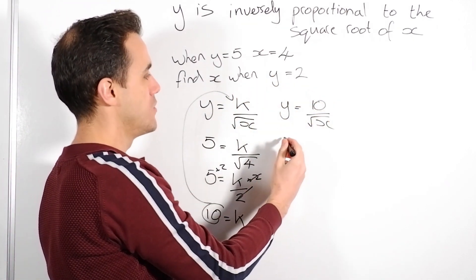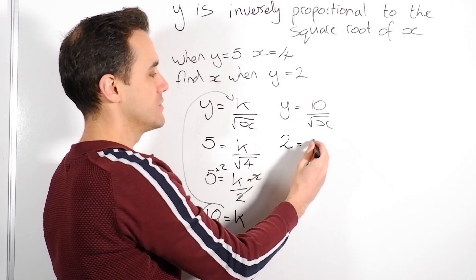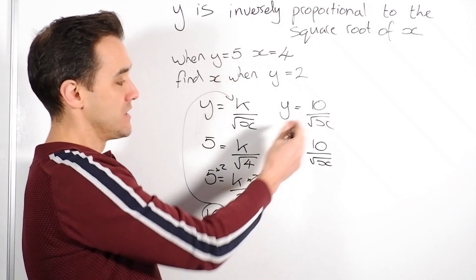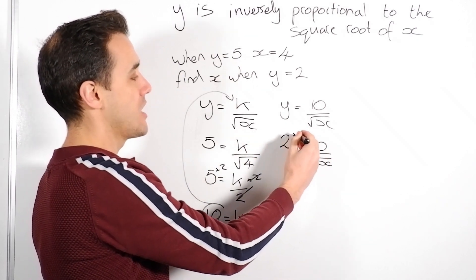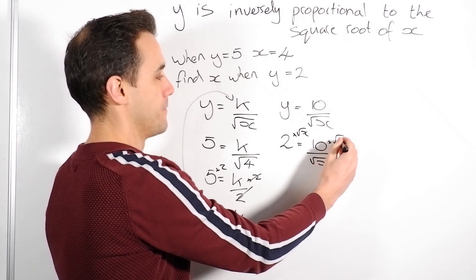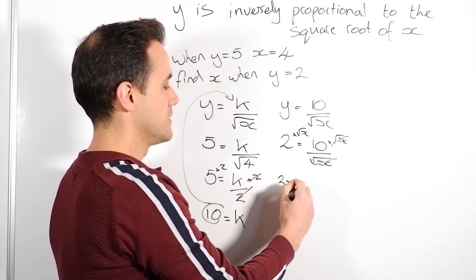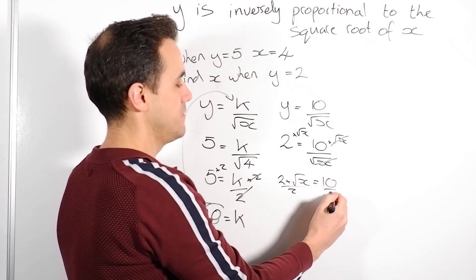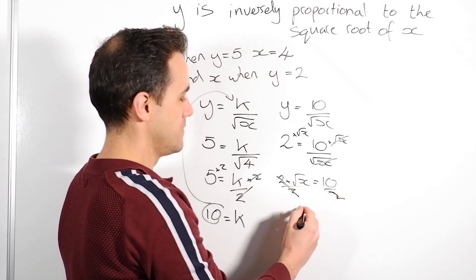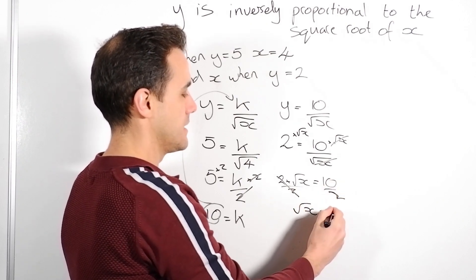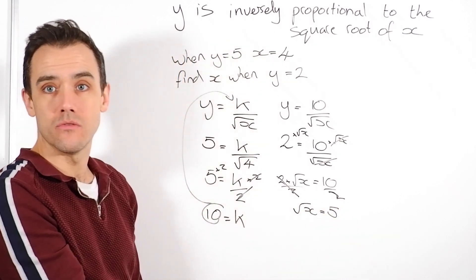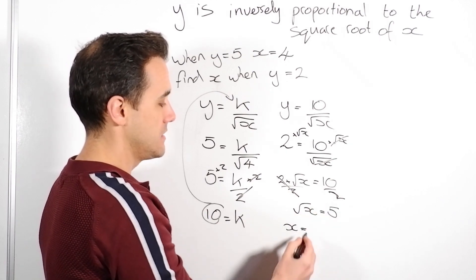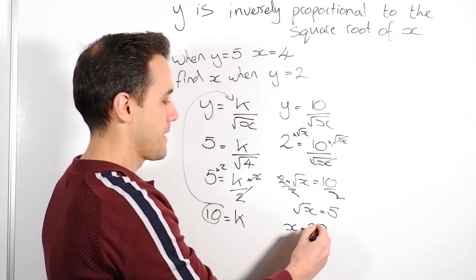So just put those values in. So y now is 2. That equals 10 divided by the square root of x. So now I need to get my x is on the bottom. I need to get that on the top. So I'll times both sides by root x. That cancels it from that side. So I've got 2 times root x is 10. Divide both sides by 2. Gets rid of that. So 10 over 2 gives me that root x is 5. Now how do I get rid of the square root? I square it. So I square both sides and I find that x is 5 squared. So x is 25.